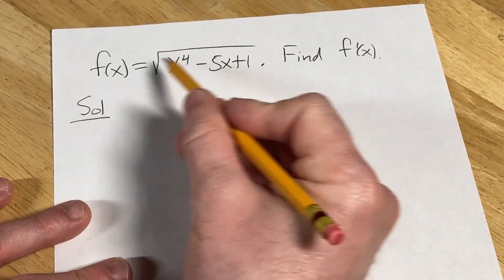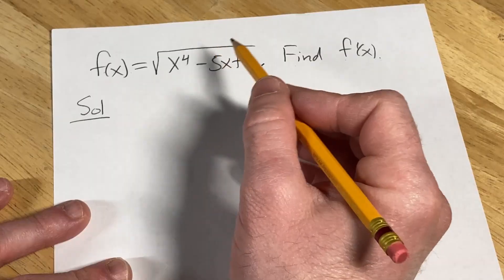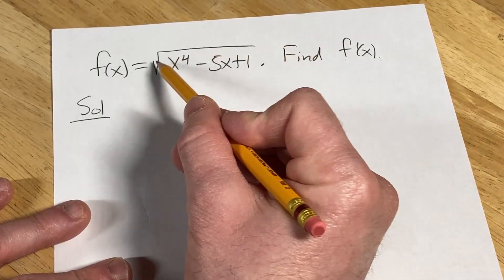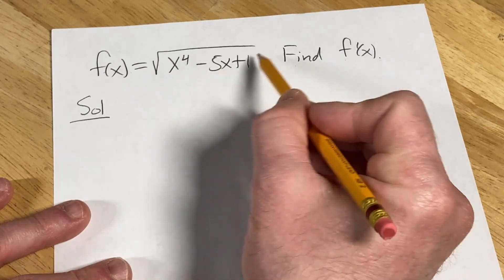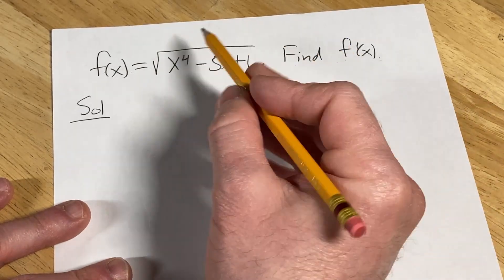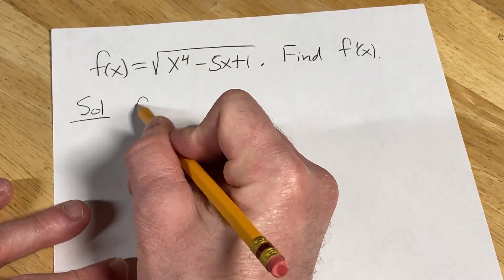Because we have a square root function, and we know how to find the derivative of power functions, we're going to rewrite this in a way that lets us express f of x as some type of power function. We can do that by doing the following.